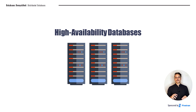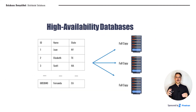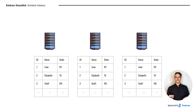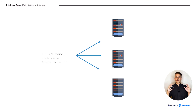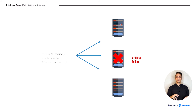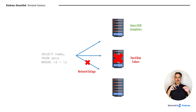High availability databases are different — the idea isn't to process large amounts of data quickly, but rather to be extremely fault tolerant. Here we put a full copy of all of the data on each node in our cluster. Unlike in big compute databases, the data aren't different across nodes — each node has a full copy of the data. So if our application needs to select data and two of our three nodes are down — one due to a hard disk failure, another due to a network outage — the query can still complete because there's a third computer available that has all the data it needs.